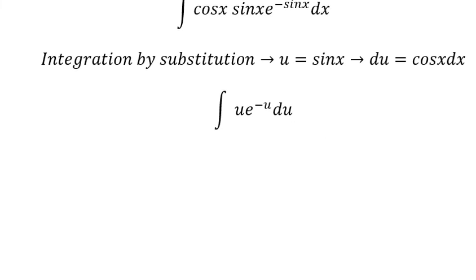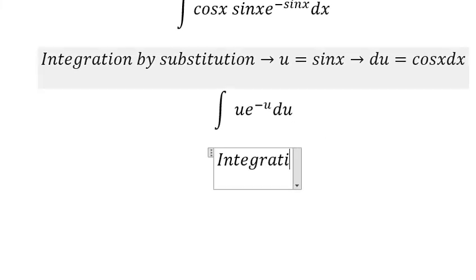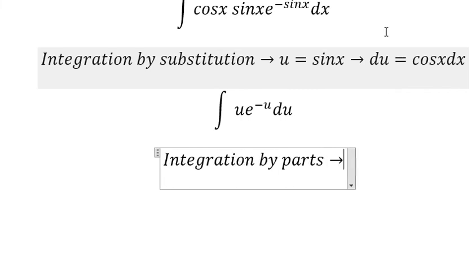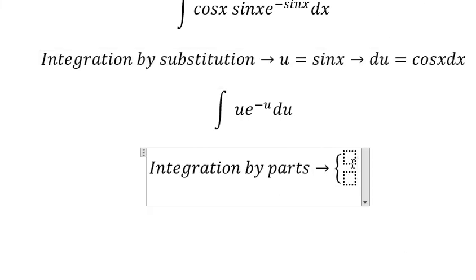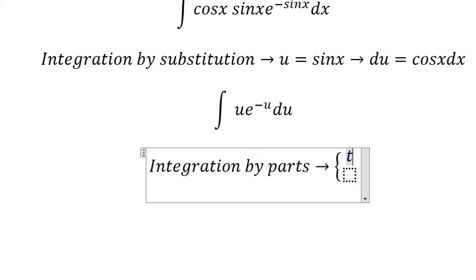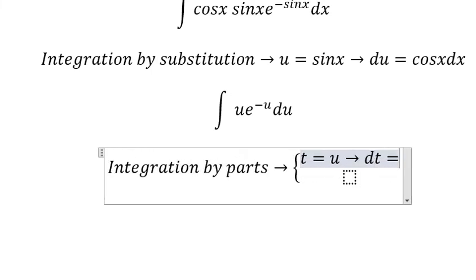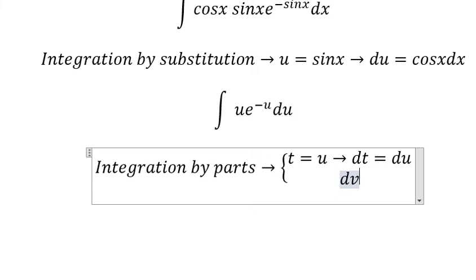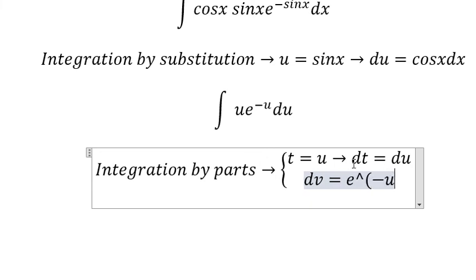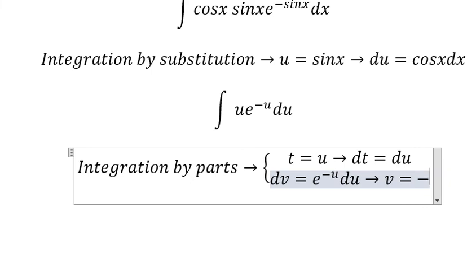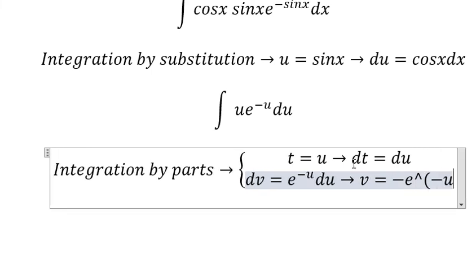Next we need to use integration by parts. We let t equal to u, and dt equal to du. For dv we let dv equal to e to the power of negative u du, and so v equals negative e to the power of negative u.